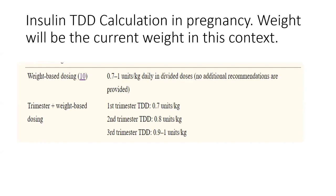For pregnancy, weight-based dosing is recommended. In the first trimester, total daily dose is 0.7 units/kg/day. In the second trimester, it is 0.8 units/kg/day. In the third trimester, it is 0.9 to 1.0 units/kg/day.